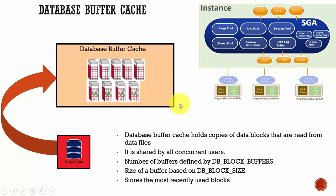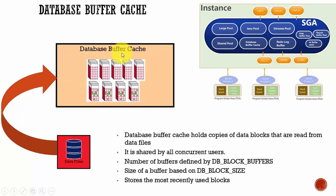Only the most recently used blocks are stored in the database buffer cache. If Oracle needs to read more data blocks from the data files into the database buffer cache and there is no space, then the unused data blocks are flushed out and the new copies of data blocks are stored in the database buffer cache.